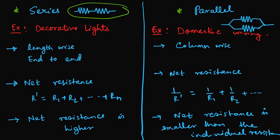In series combinations the resistors are connected lengthwise or end to end whereas in parallel they are combined in column wise.